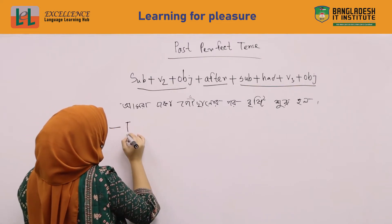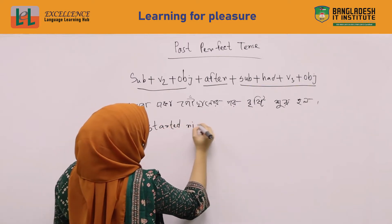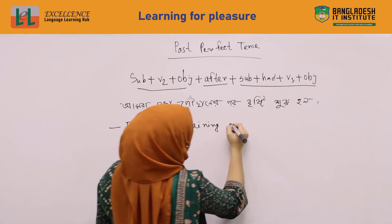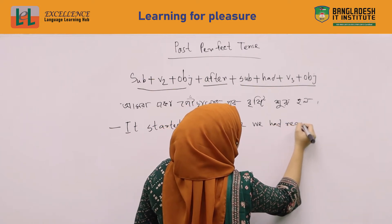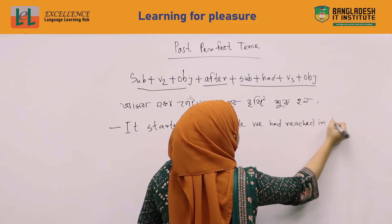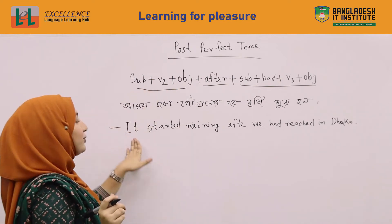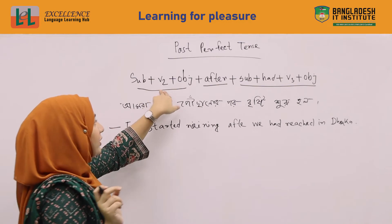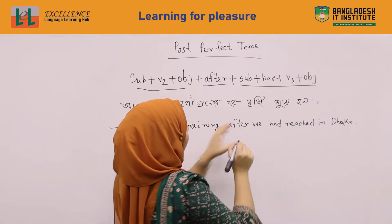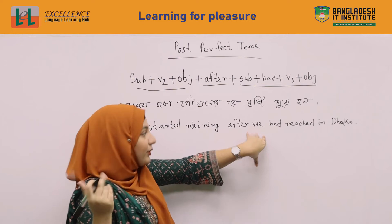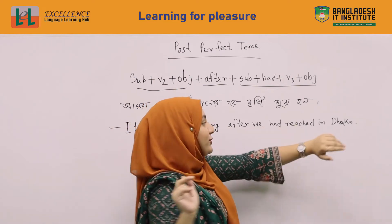It started raining after we had reached in Dhaka. Structure wise: 'it' is subject, 'started' is verb second form, 'raining' is part of the object, then 'after'. After that, we have used subject 'we', then 'had', then verb third form.